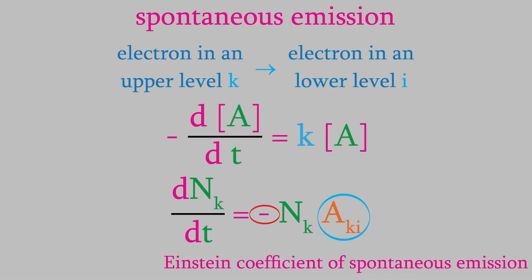There's a similar equation for the process of stimulated emission. Here's that one. Again, our reactants are the electrons in the upper energy level, so that's what we're determining the rate with respect to. Once again, we have negative NK times a constant, this time with the symbol BKI. This time, we also have this additional factor, which is called the energy density, and it has the symbol of the Greek letter rho.